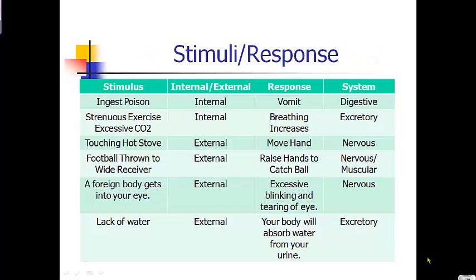Here are more examples of stimuli and responses causing homeostasis. If you ingest poison, your body will try to get rid of it and bring itself back into perfect working order — homeostasis — by causing you to vomit. If you're exercising really hard, your breathing increases in order to bring more oxygen into your body and get rid of carbon dioxide. If you touch a hot stove, your brain will automatically cause you to move your hand away very quickly — you don't have to think about it.